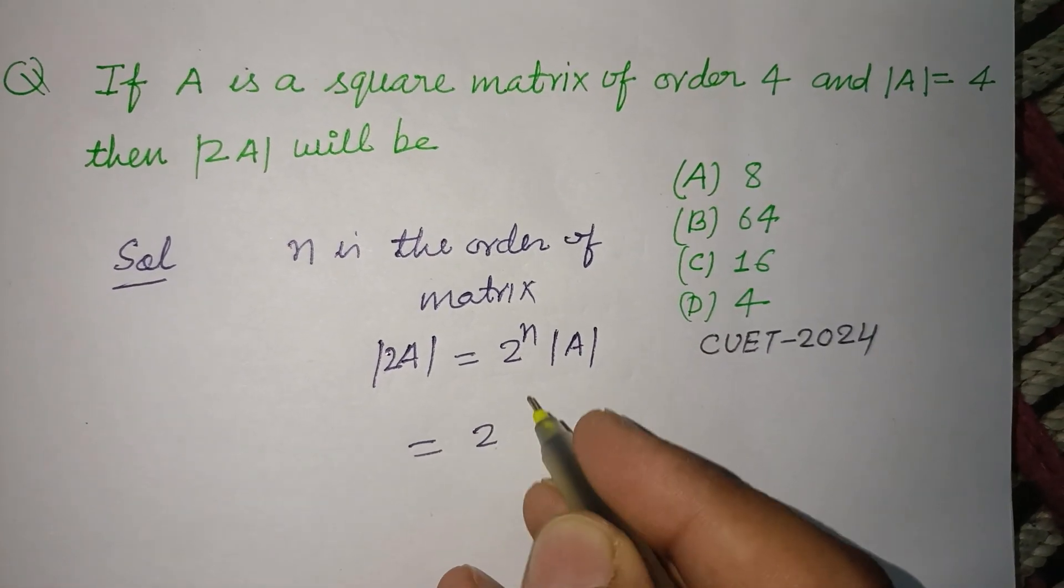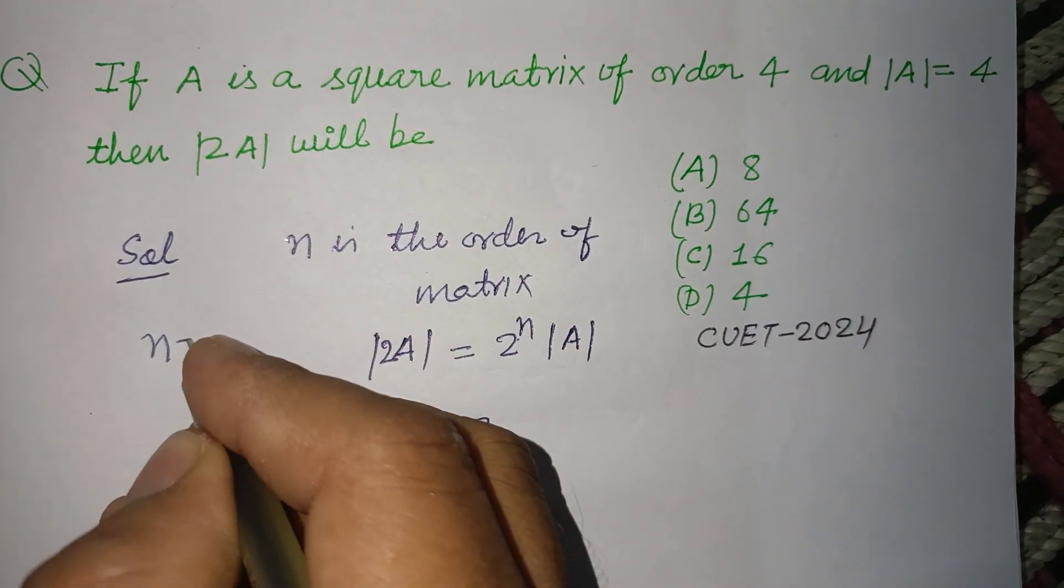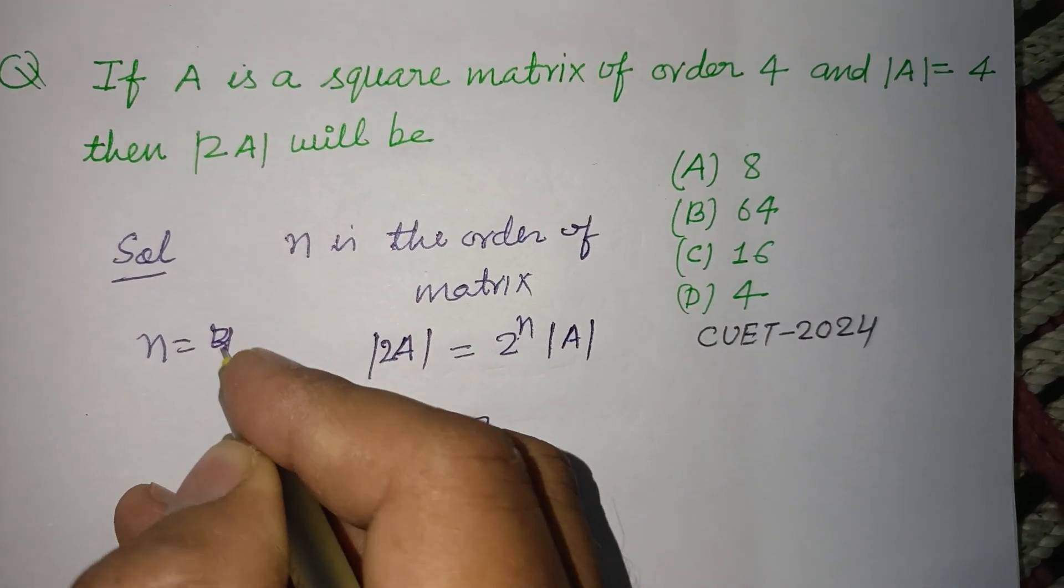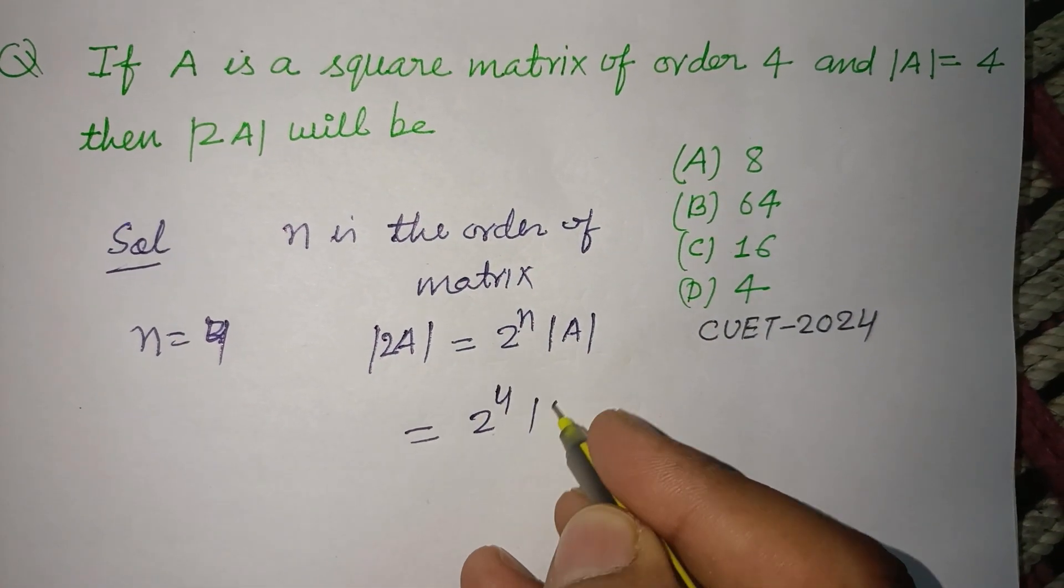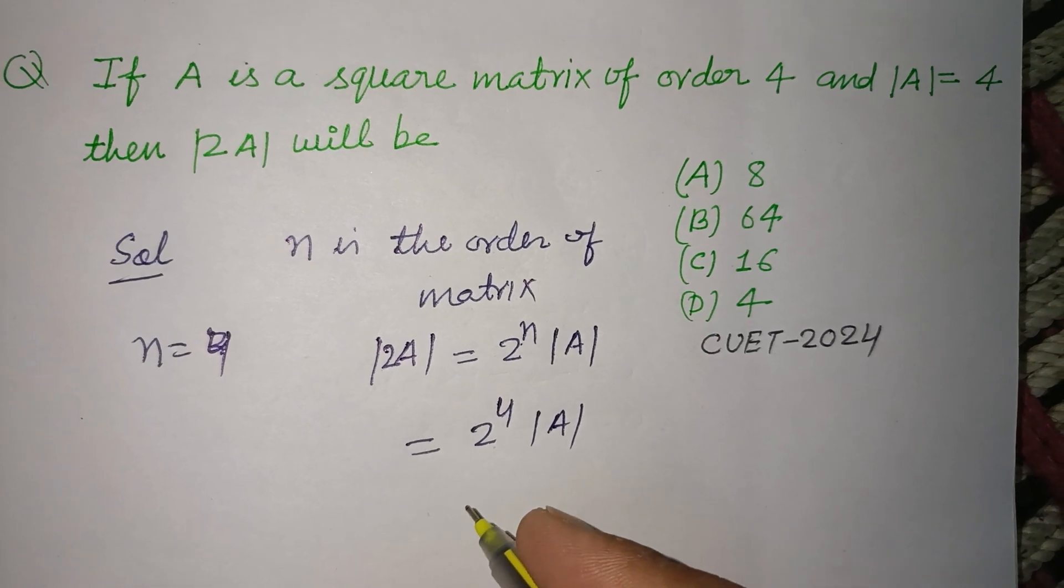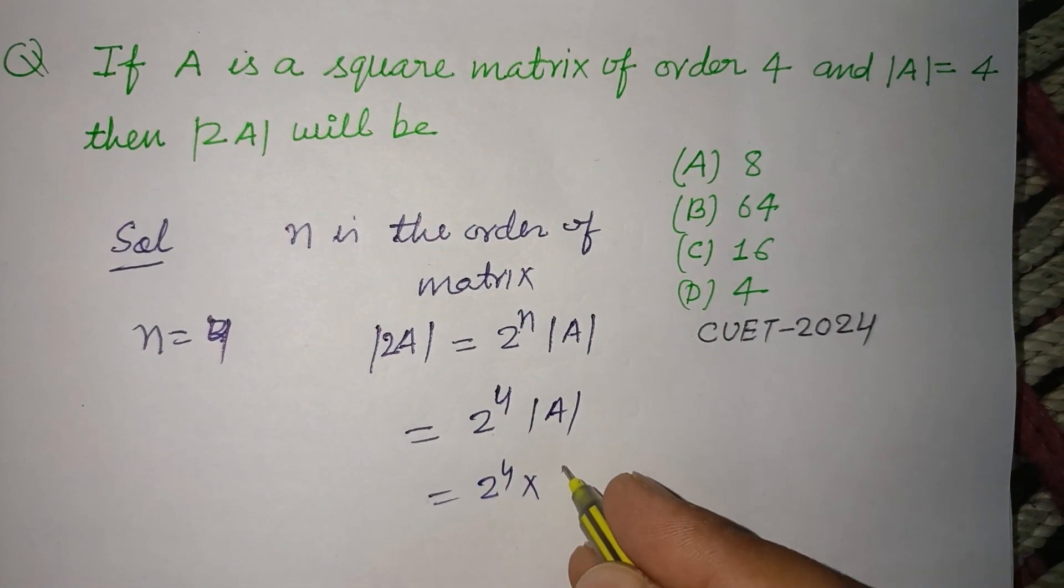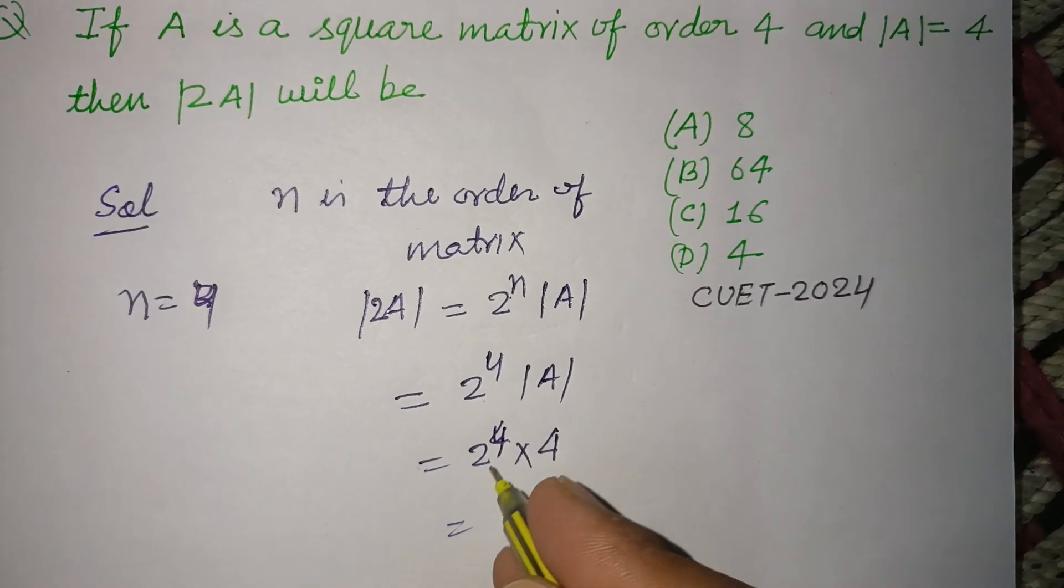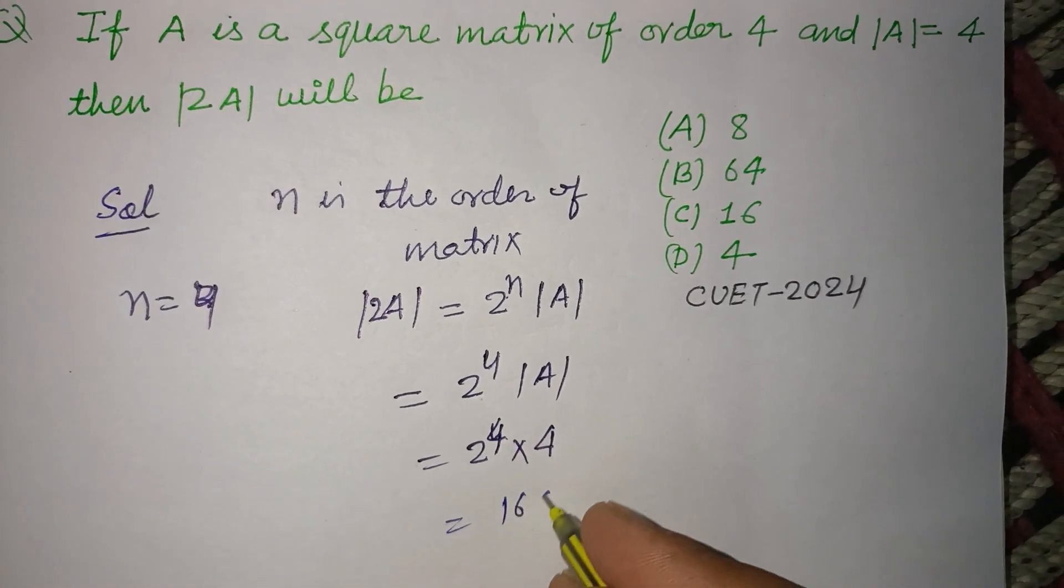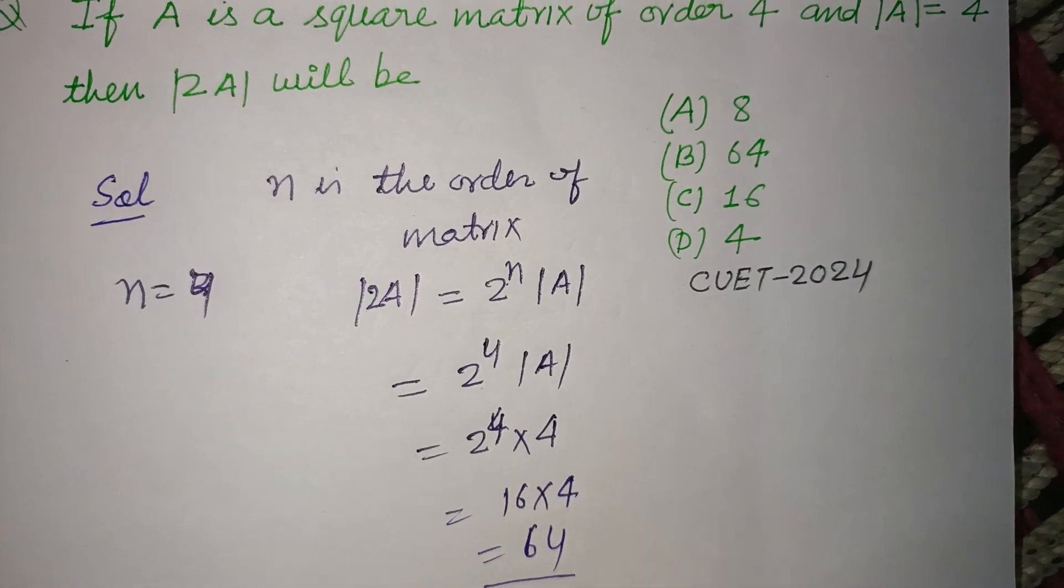And it is given that n is 4 in this question, order 4. So this is 2 to the power 4 times determinant of A, and determinant of A is also 4. Therefore, 2 to the power 4 is 16, 16 into 4 is 64. 64 is the correct answer.